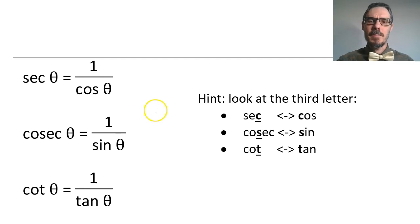How do I remember them? The way I remember is I look at the third letter. Sec is one over cos. Cosec is one over sine. And cot is one over tan.